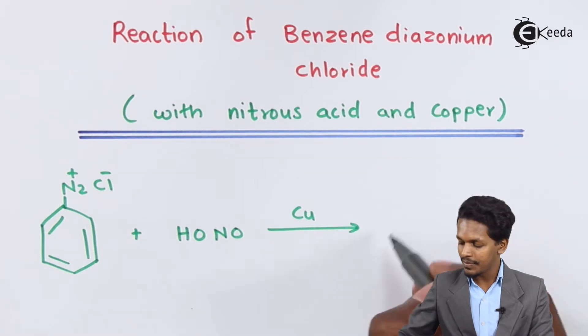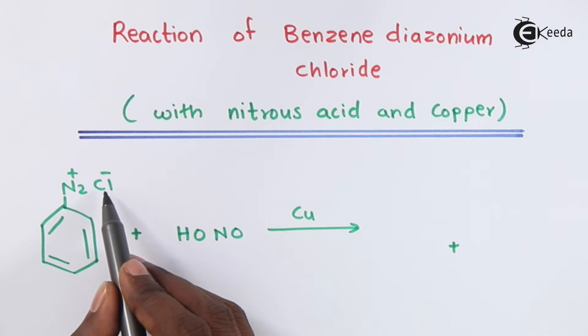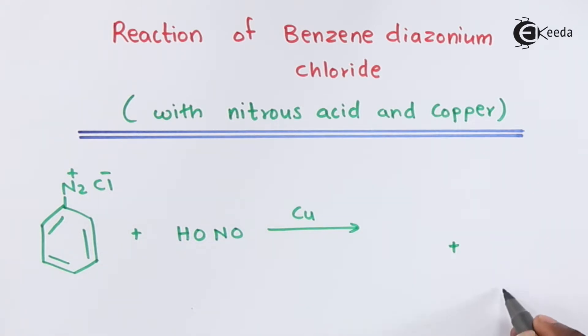We could get the byproduct - one of the H takes away this Cl in the form of HCl. It will be removed as a byproduct.